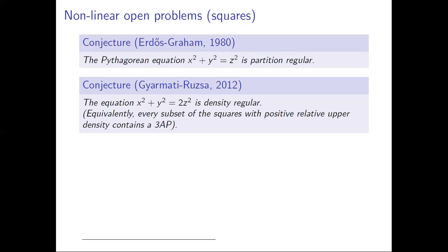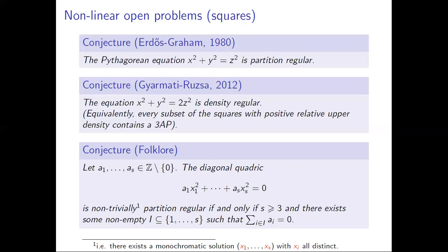We also have a conjecture of Gyarmati and Ruzsa, which states that every subset of the squares with positive relative upper density — that is, positive density with respect to the squares — contains a three-term arithmetic progression. More compactly, the equation x² + y² = 2z² is density regular. And if we go back to Rado's theorem and try to generalize that to the squares, the corresponding conjecture is that the sum a_i x_i² = 0 should be non-trivially partition regular if and only if s is at least three and it obeys Rado's condition.